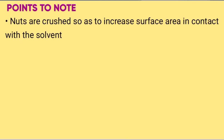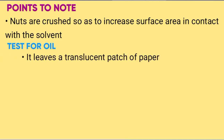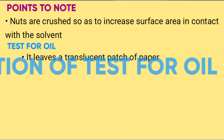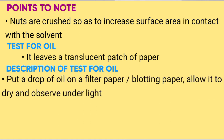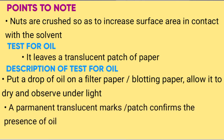Points to note: nuts are crushed so as to increase the surface area in contact with the solvent. Oil leaves a translucent patch on paper. To test for oil, put a drop of oil on a filter paper or blotting paper, allow it to dry, and observe under a light. A permanent translucent mark confirms the presence of oil.